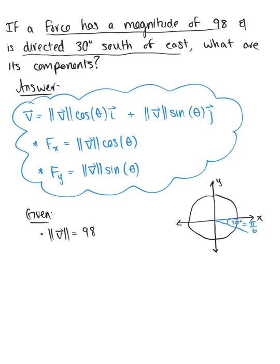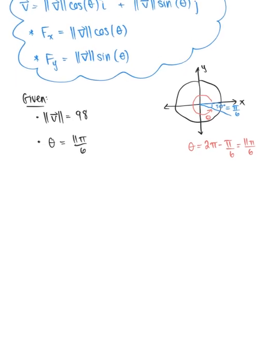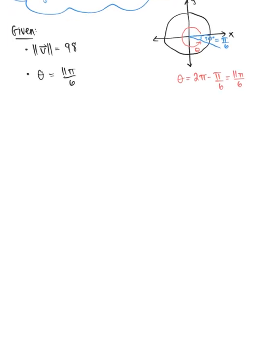The angle must be measured from the positive x-axis moving counterclockwise. So theta equals 2 pi minus pi over 6, which gives us 11 pi over 6. We now have our magnitude and our angle of 11 pi over 6, and we are ready to find the components of the force.